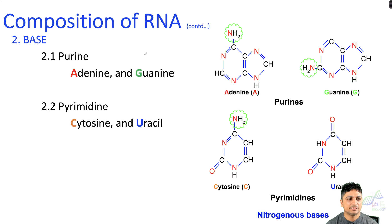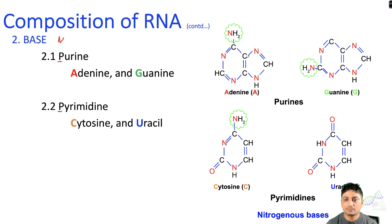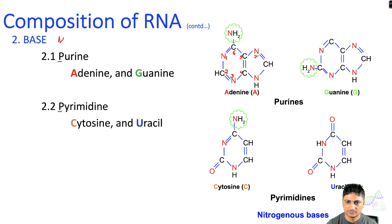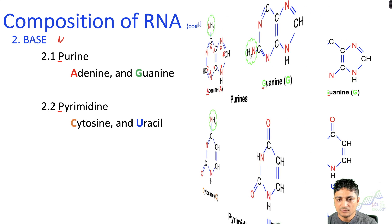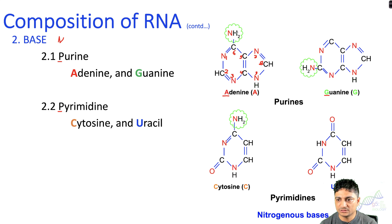The second component of RNA is the base, which is a nitrogenous base. There are two types: purine and pyrimidine. Purine is a nine-member double ring structure. There are two different types of purine: adenine and guanine. Adenine has an amine group at the six-carbon position, whereas guanine has an amine group at the two-carbon position.